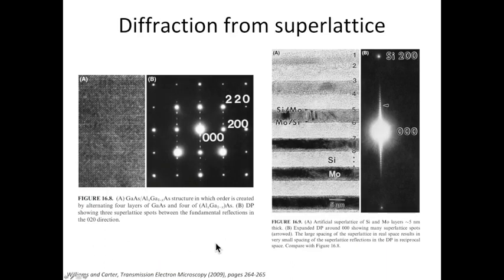We'll finish today's video by talking about the diffraction from superlattice. The examples are taken directly from the Williams and Carter transmission electron microscopy book. For the example on the left, we have gallium arsenide and aluminum gallium arsenide.